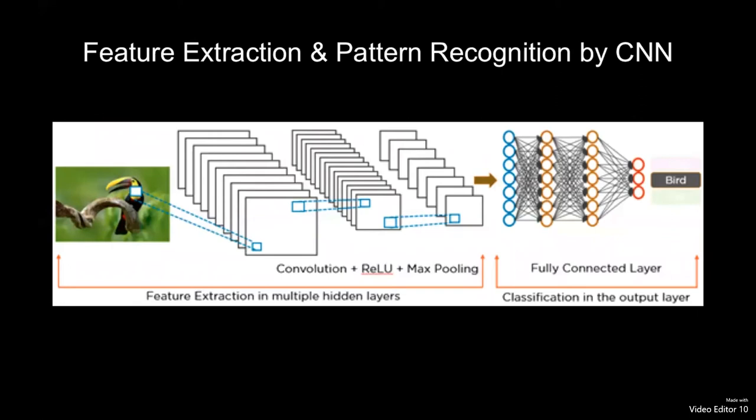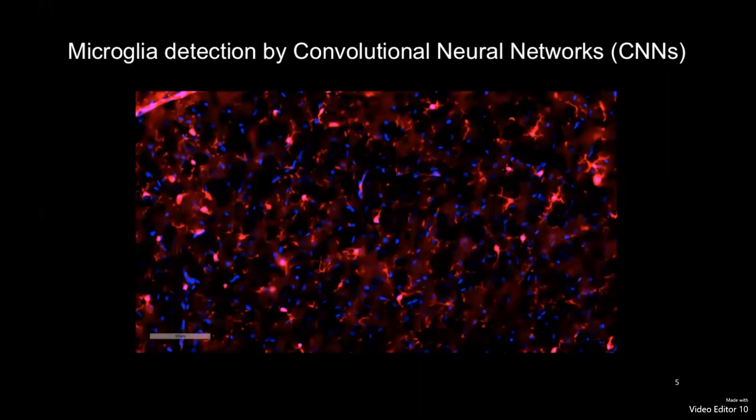Deep learning technology has demonstrated promising results to identify objects in a regular image. It is done by learning the features predefined for the image and uses a convolutional neural network to learn the decision process and then predicts whether the image contains a bird or a dog, or in our case, a microglia cell.